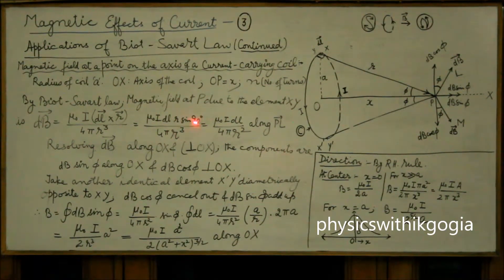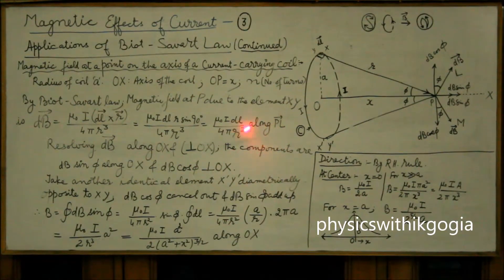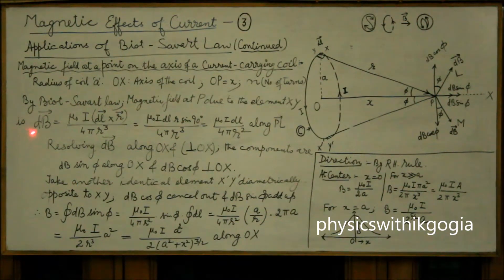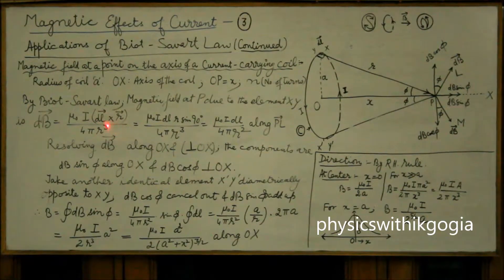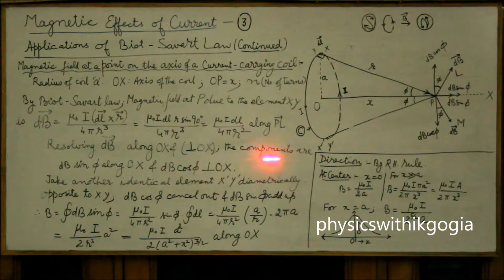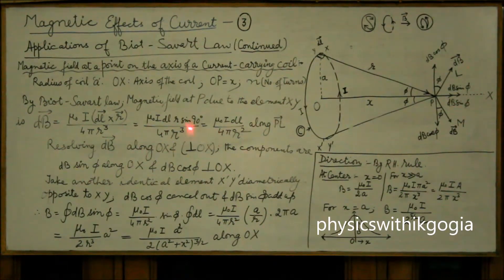That is theta will come out to be 90 degrees which reduces the expression to μ₀ i dL over 4π r² along PL. This direction also needs to be understood. We know dB is perpendicular to dL and perpendicular to r. So this is by cross product rule.